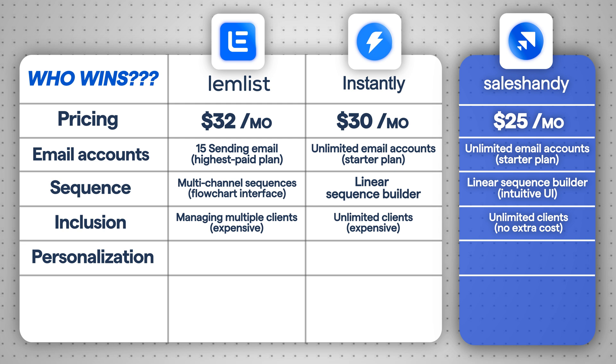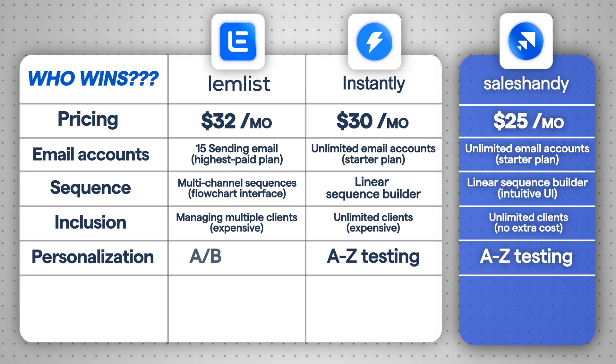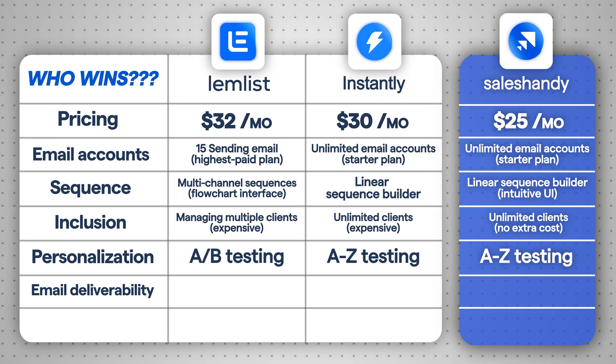Moving on, the next important thing is personalization. As you may already know, personalization is crucial for cold emails, and Lemlist, Instantly, and Sales Handy all offer solid options. But when it comes to testing, Instantly and Sales Handy pull ahead with an A-to-Z testing feature. You can test up to 26 different variations of your emails to see what works best. Lemlist, on the other hand, only offers simple A/B testing.